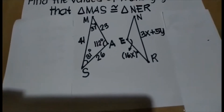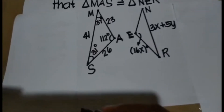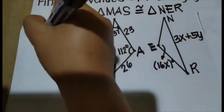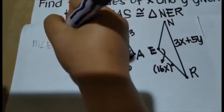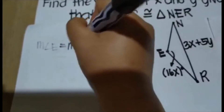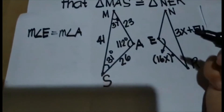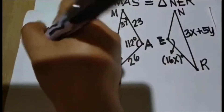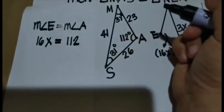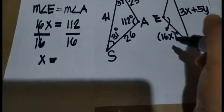So since we are to solve for X, we can use angle E is congruent to angle A. So we can say that measure angle E is equal to measure angle A. Then we substitute: measure angle E with 16X and measure angle A with 112. Using the division property of equality, we divide both sides by 16. So 16 divided by 16 is 1, giving us X. And 112 divided by 16 is 7. Therefore, the value of X is 7.